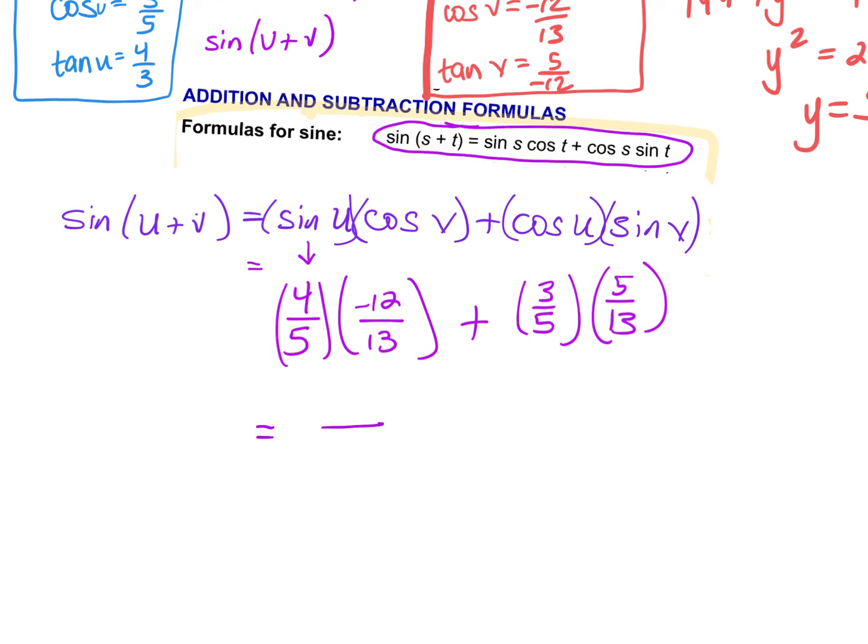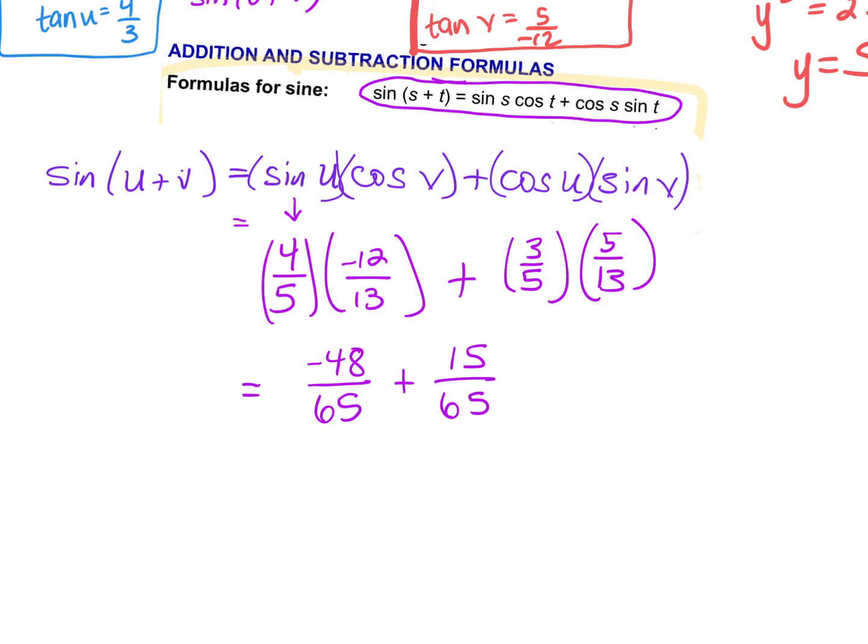Multiply your numerators together. 4 times negative 12 is negative 48. Denominators, 5 times 13 is 65, plus 3 times 5 is 15 over 5 times 13 is 65. Notice at this point we have common denominators. That should happen every single time. If it doesn't, you need to look back and say where did I make a mistake.